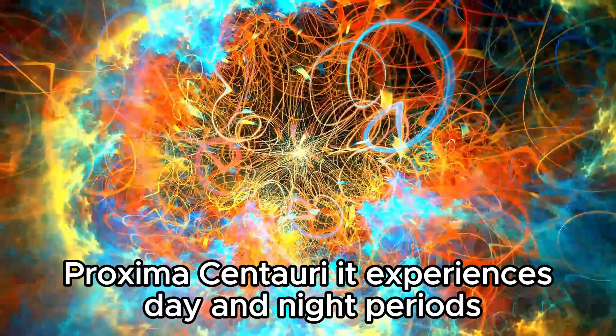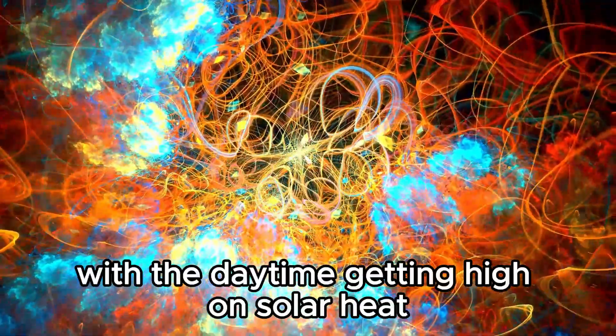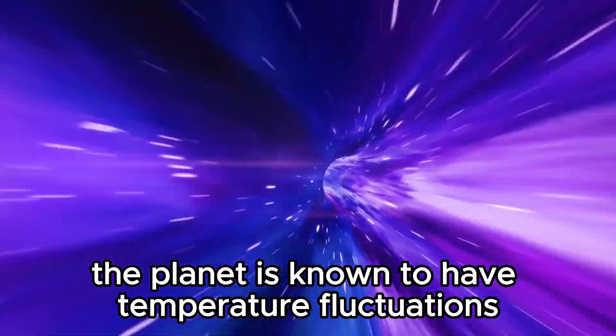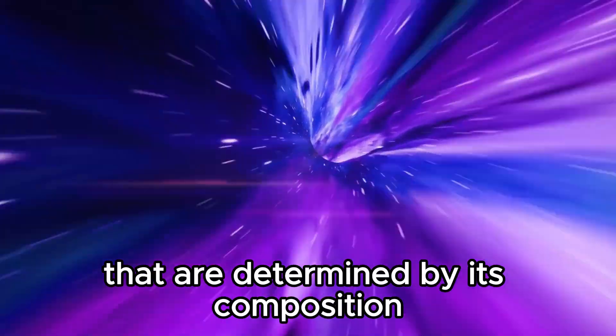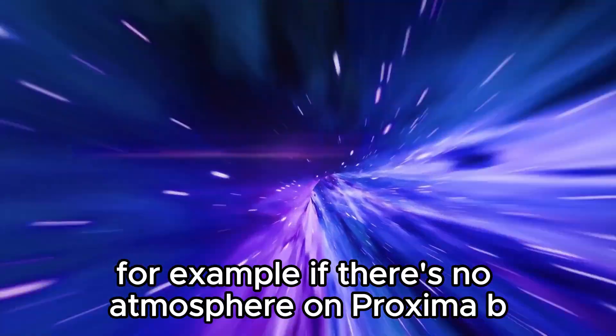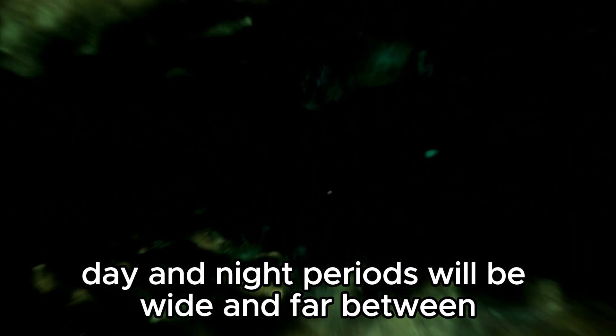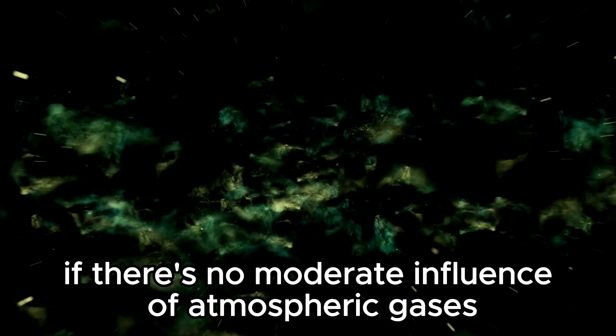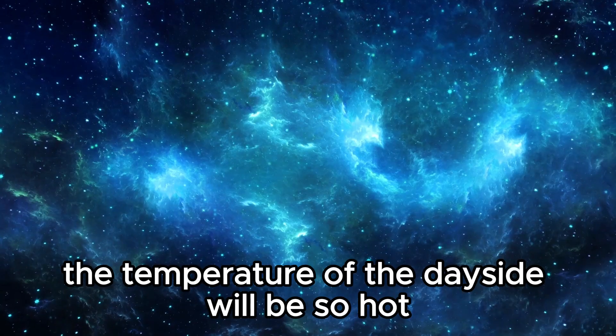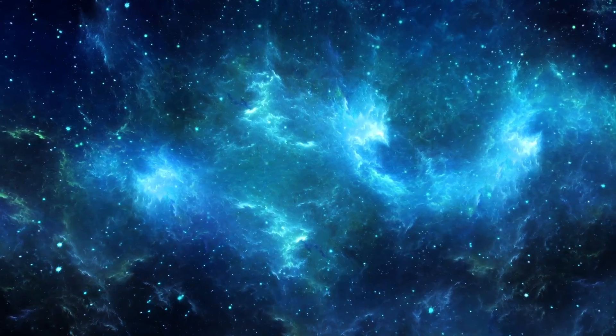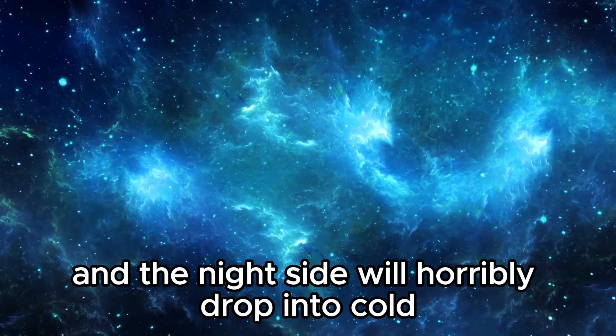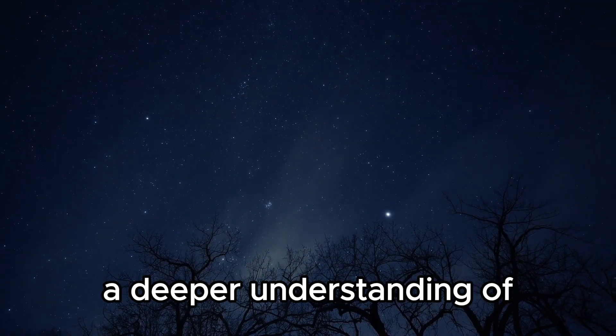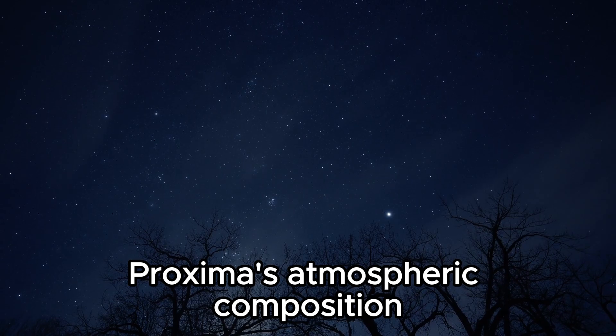The planet is known to have temperature fluctuations that are determined by its composition. If there's no atmosphere on Proxima B, the difference between its day and night periods will be wide and far between. If there's no moderate influence of atmospheric gases and oceans, the temperature of the day side will be so hot like a black body, and the night side will horribly drop into cold darkness.